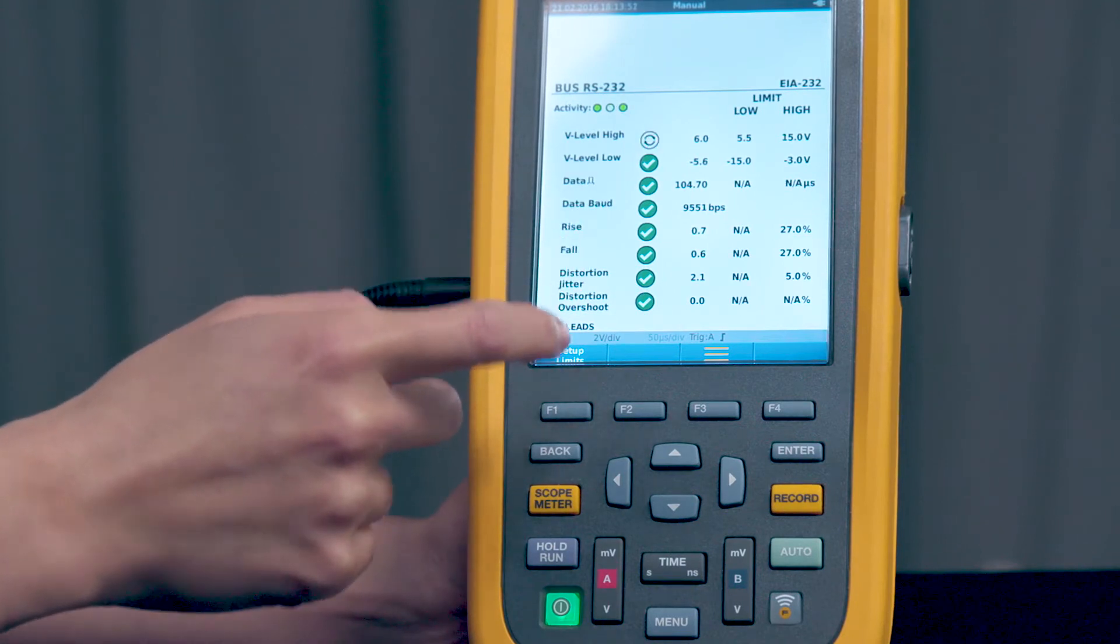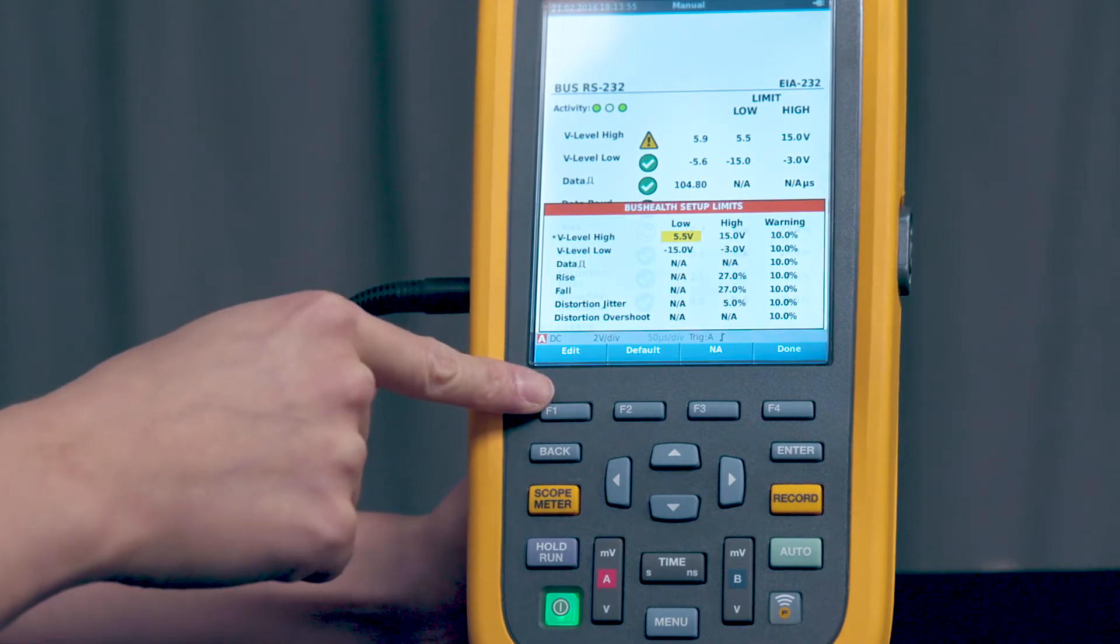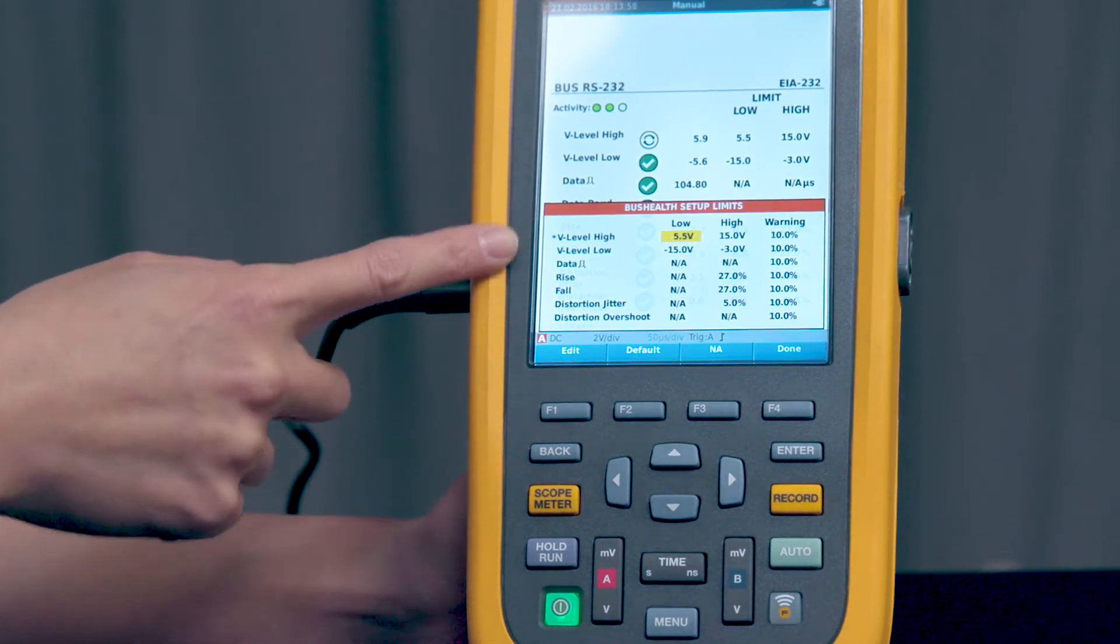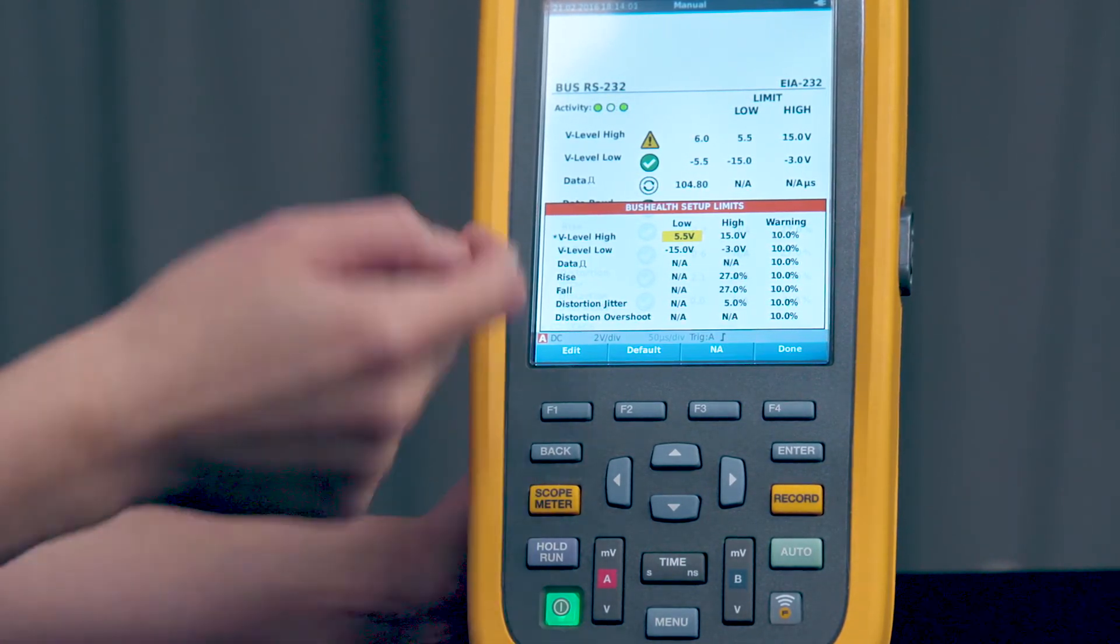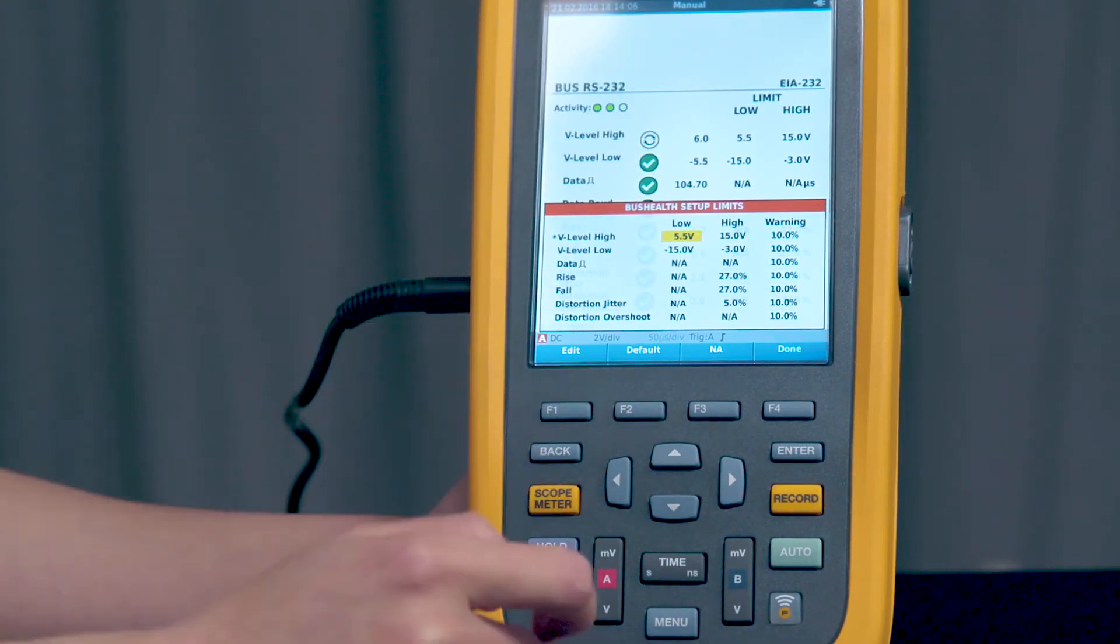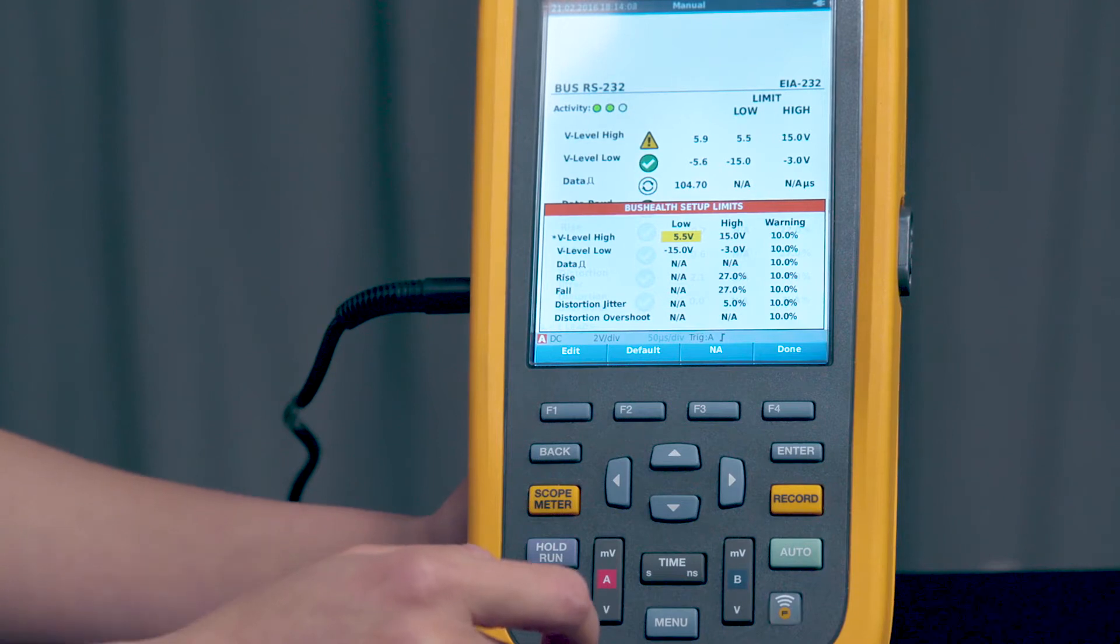So let's adjust the setup limits by pressing F1. You can see here there's an asterisk next to VLevelHigh. That's because I went in and I manually changed one of the limits. I actually changed the low limit so that we could see the exclamation mark symbol.